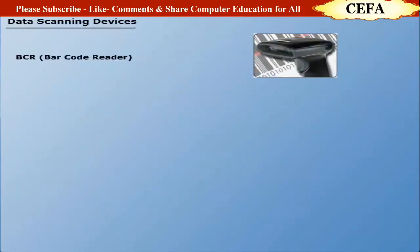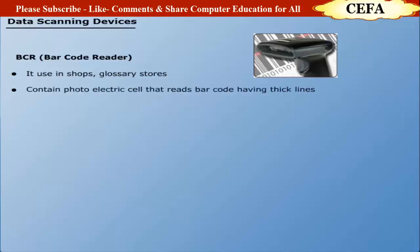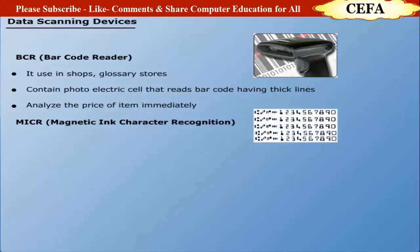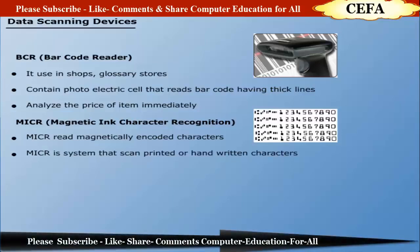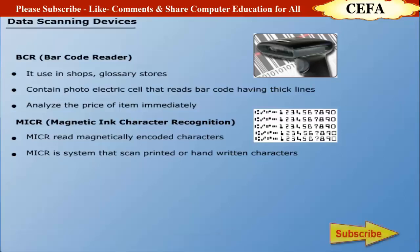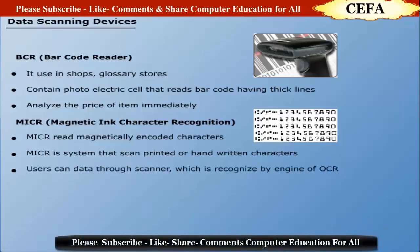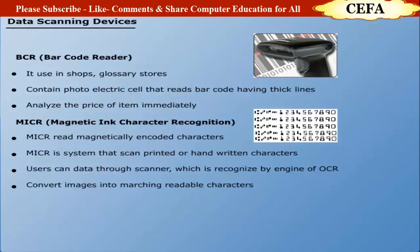Barcode Reader: Normally used in shops and grocery stores, this device contains photoelectric cells that read barcodes consisting of lines of different thickness. Barcode reader helps shopkeepers to analyze the price of an item immediately. MICR - Magnetic Ink Character Recognition: MICR is used to read magnetically encoded characters and provides full alphanumeric recognition of printed or handwritten characters by scanning the form. The MICR converts the images into machine-readable characters using an OCR system engine.